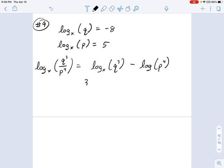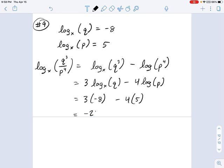And what's log of q? Well, that's negative 8. So this is 3 times negative 8 minus 4 times what's log of p? That's 5. So this becomes negative 24 minus 20. So the answer in this case would be negative 44.